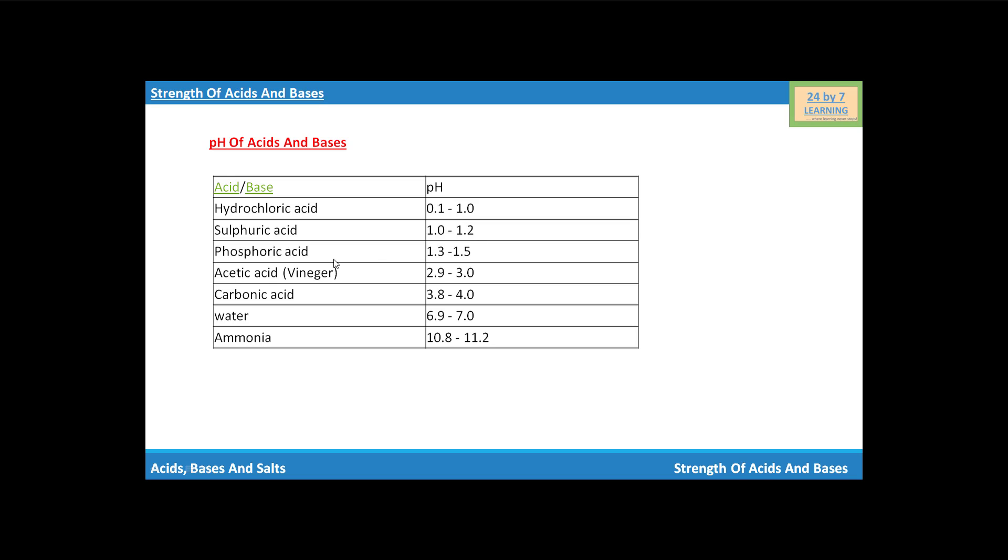The pH of phosphoric acid is between 1.3 to 1.5, and pH of acetic acid, or we can say vinegar, is between 2.9 to 3.0.